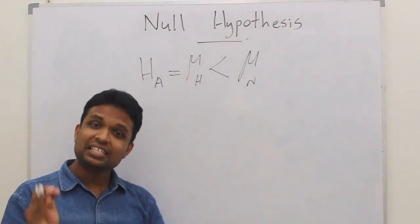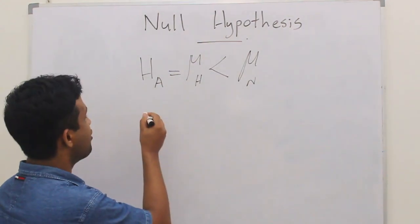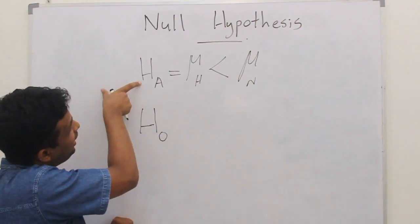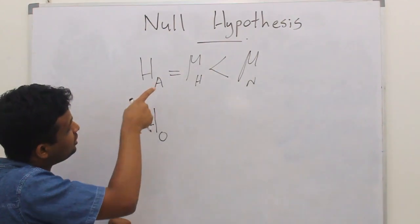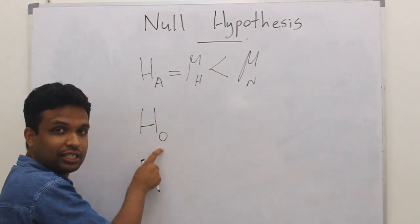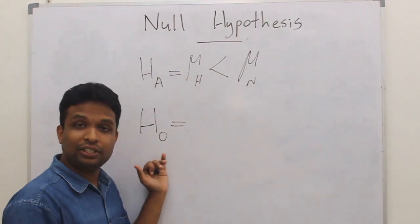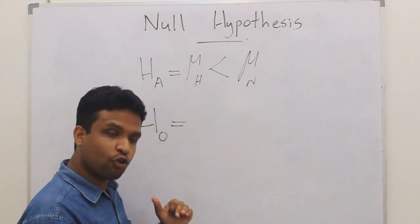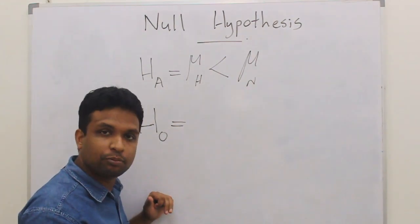Now what is null hypothesis? We denote null hypothesis as H naught. So H_A is alternative hypothesis, H_0 is null hypothesis. Null hypothesis indicates the opposite or the negative form of alternative hypothesis.